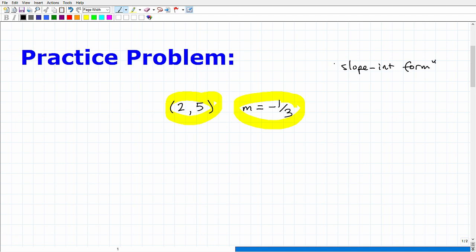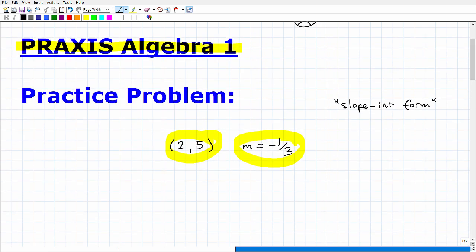Okay, so let me just tell you what the problem is. Then I'm going to give you a little bit of a hint and then I'm going to solve the problem. Okay, so I'd like you to find the equation of a line that passes through this point and has this slope, and I'd like you to put that equation in slope-intercept form. Okay, slope-intercept form.